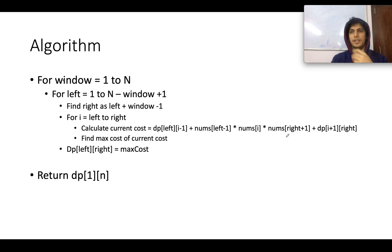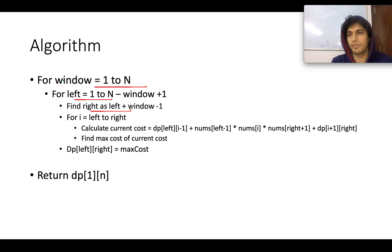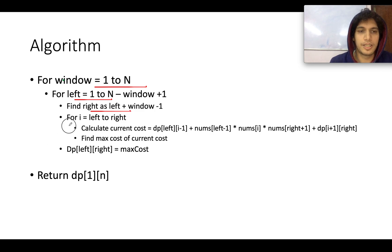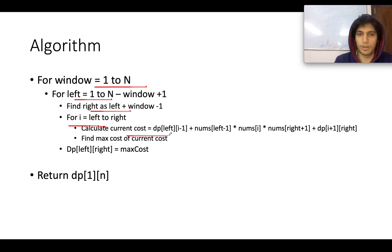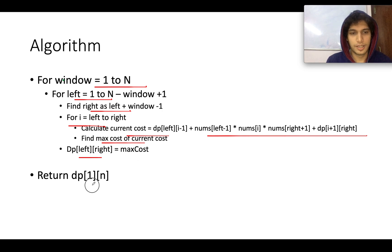The algorithm works as follows: for window size 1 to n, iterate. Left goes from 1 to n minus window plus 1. Compute the right index as left plus window minus 1. For each i from left to right, calculate the cost using the formula. Find the maximum cost, and DP[left][right] gives the actual maximum coins for the current window. Return DP[1][n].